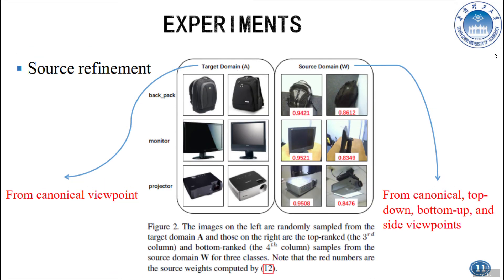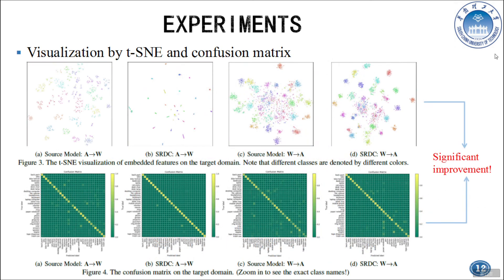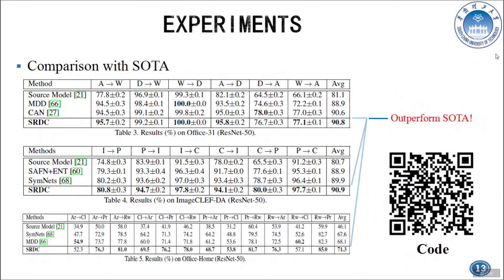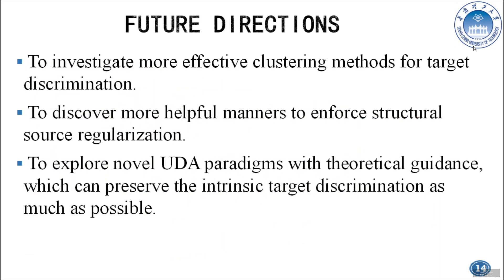From this figure, we can observe that source instances from a canonical viewpoint have pair-wise structure. This is expected. Significant improvement can be observed from t-SNE visualization and the confusion matrices. SRDC outperforms state-of-the-art on three commonly used benchmark datasets. All the empirical evidence verifies the effectiveness of our method. Some future directions are worth pursuing.